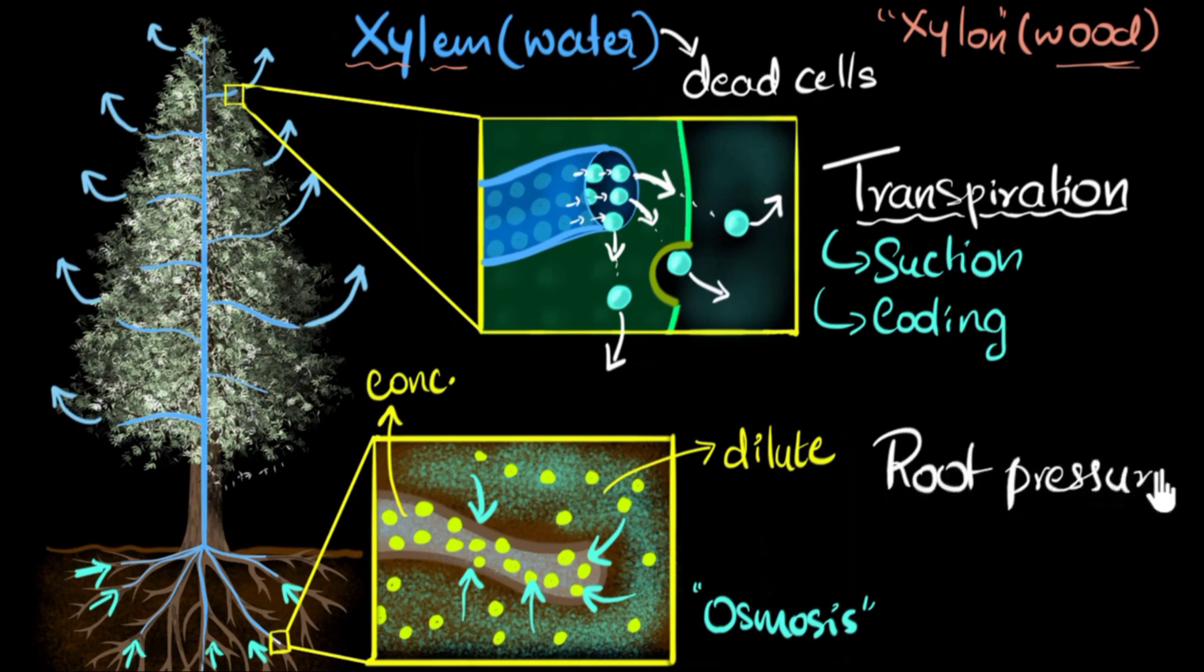Let me just write that down. This pressure is called root pressure. And in more general, because this is happening due to osmosis, you can also call this as the osmotic pressure. And so this root pressure forces the water to go up as well. It's not as strong as the suction produced due to transpiration, but during the night time this is the only available force. So this makes sure that the column doesn't fall down. And that's pretty much it.